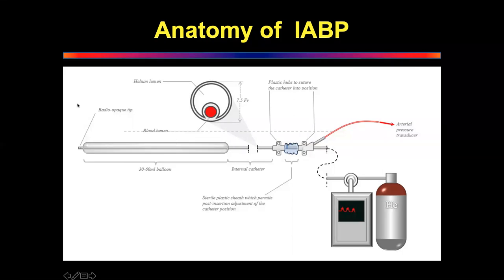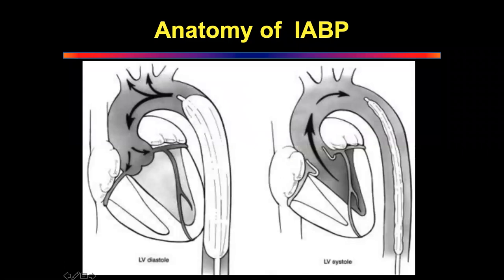There is a fixation device to hold the balloon pump in place. Inside is the lumen of the catheter, and on the outside is the 30 to 60 ml balloon. The tip of the balloon pump always has a radiopaque tip so you can visualize it on X-ray to confirm position. The tip must lie just distal to the left subclavian artery, because the pump is inserted retrograde from the femoral artery.